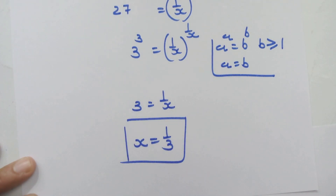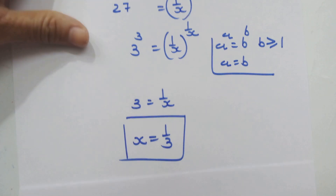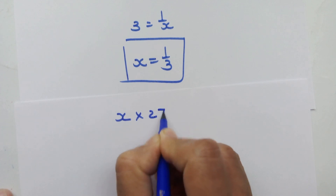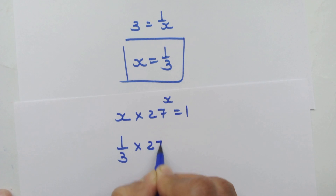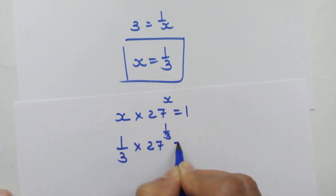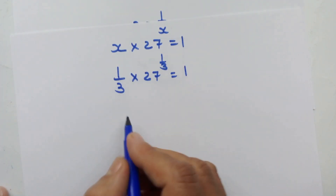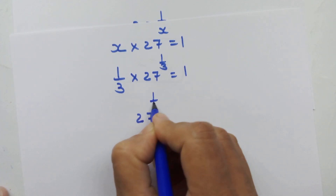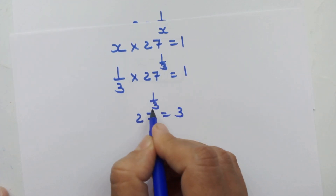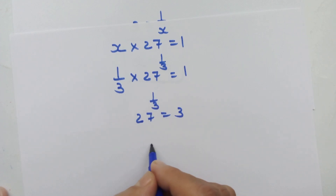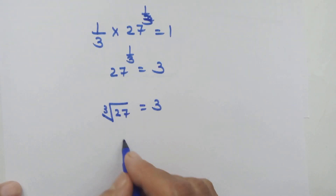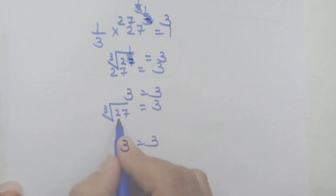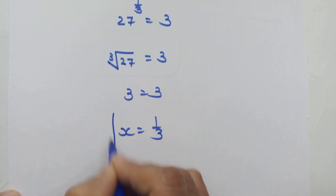Now we have the value of x. Let's substitute x equals 1 upon 3 into our main equation: 1 upon 3 into 27 raised to 1 upon 3 is equal to 1. Since 27 raised to 1 upon 3 is the cube root of 27, which equals 3, we get 1 upon 3 into 3 equals 1. So x equals 1 upon 3 is the correct answer.